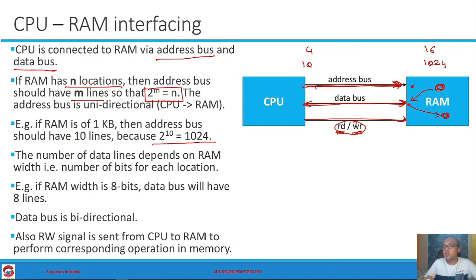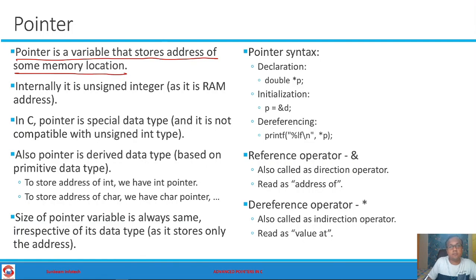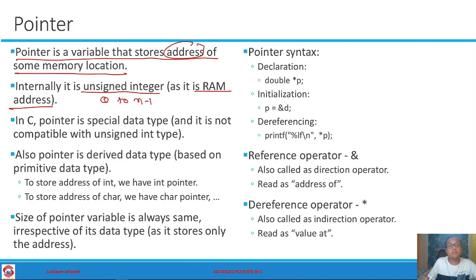Without an address, RAM will never know exactly which location data is to be written to or read from. Now that this is clear, we can formally define the pointer. A pointer is a variable that stores the address of some memory location. That address is simply a RAM address — an unsigned number in the range of 0 to n-1.